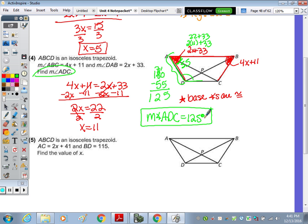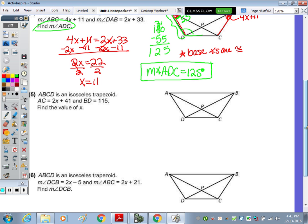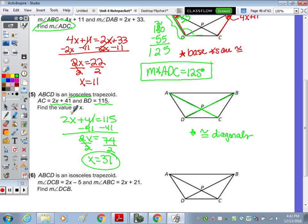Almost there. Number 5. An isosceles trapezoid, we're taking a look at AC and BD. AC is a diagonal. BD is a diagonal. And we have congruent diagonals if it's isosceles. Okay. So if it's isosceles, diagonals are congruent. We set their measures, which are given algebraically. One's numeric though, so that makes it a little bit easier. Equal. So 2X plus 41 equals 115. Subtract 41. 5 minus 1 is 4. 11 minus 4 is 7. Divide by 2. And X is 37. Said to find X, so we're done.